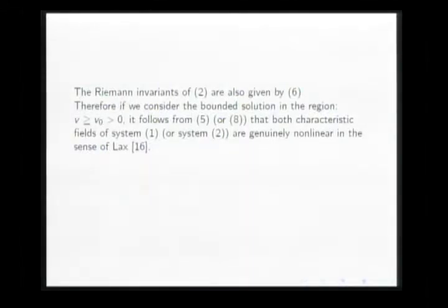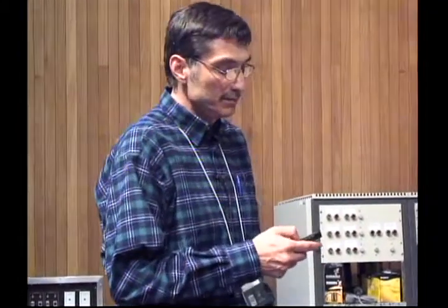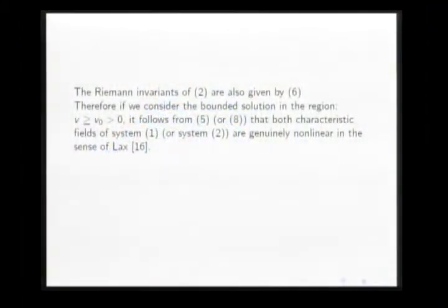And the Riemann invariant of the two are also given by this. Therefore, we consider the boundary solution in the region where V is bigger than V zero. V zero is a positive constant. Of course, here, this guarantees the genuinely nonlinear system in the sense of Lax. Here, the characteristics of the system are genuinely nonlinear in the sense of Lax.